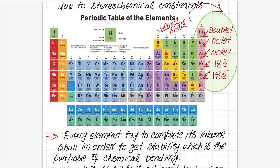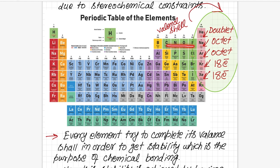We are already familiar with terms such as doublet, octet, and eighteen electrons. Hydrogen has one electron in its valence shell (1s¹ configuration), so it gains one more electron to complete the doublet in its valence shell and attains the noble gas configuration of helium. Similarly, carbon, nitrogen, oxygen, fluorine, silicon, phosphorus, sulfur, and chlorine gain electrons to get the noble gas configuration of neon and argon, completing the octet of eight electrons in their valence shell.